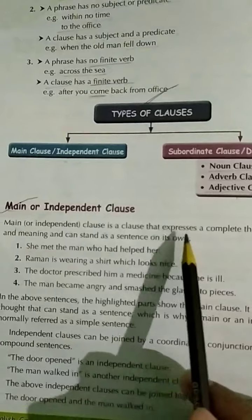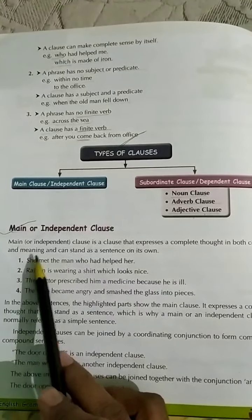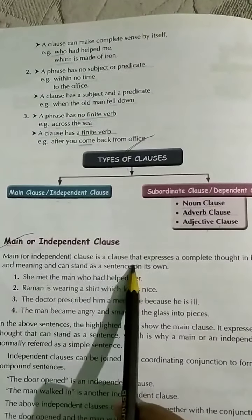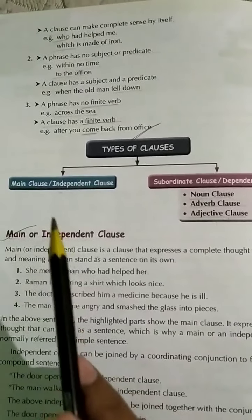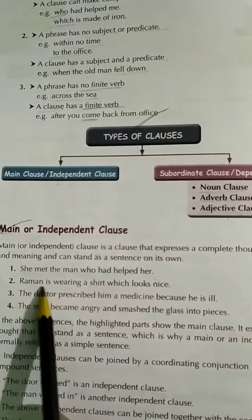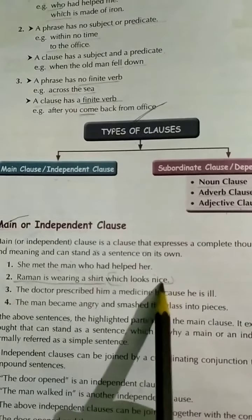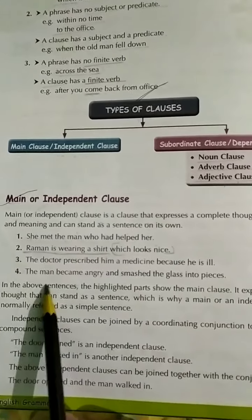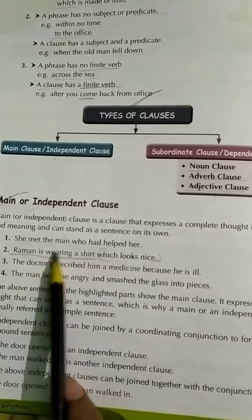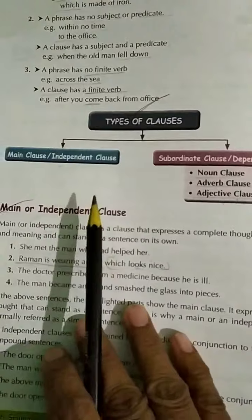A main clause expresses a complete thought in both context and meaning and can stand as a sentence on its own. It does not depend on another part. For example: 'She met the man who had helped her' — and 'Roman is wearing a shirt which looks nice.' Here, 'Roman is wearing a shirt' has its own complete sense and is the main clause, while 'which looks nice' depends on it and is the subordinate clause.